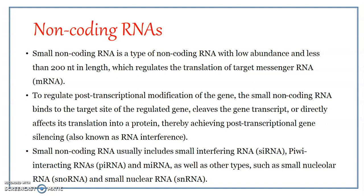One of the most common and widely studied non-coding RNAs includes rRNAs, tRNAs, small nucleolar RNAs, or small nuclear RNAs. All these RNAs are non-coding RNAs in the sense that they do not encode any protein. The non-coding RNAs include rRNAs and tRNAs which get involved in the translation process, and small nuclear RNAs — referred to as snRNAs — that are involved in RNA splicing.